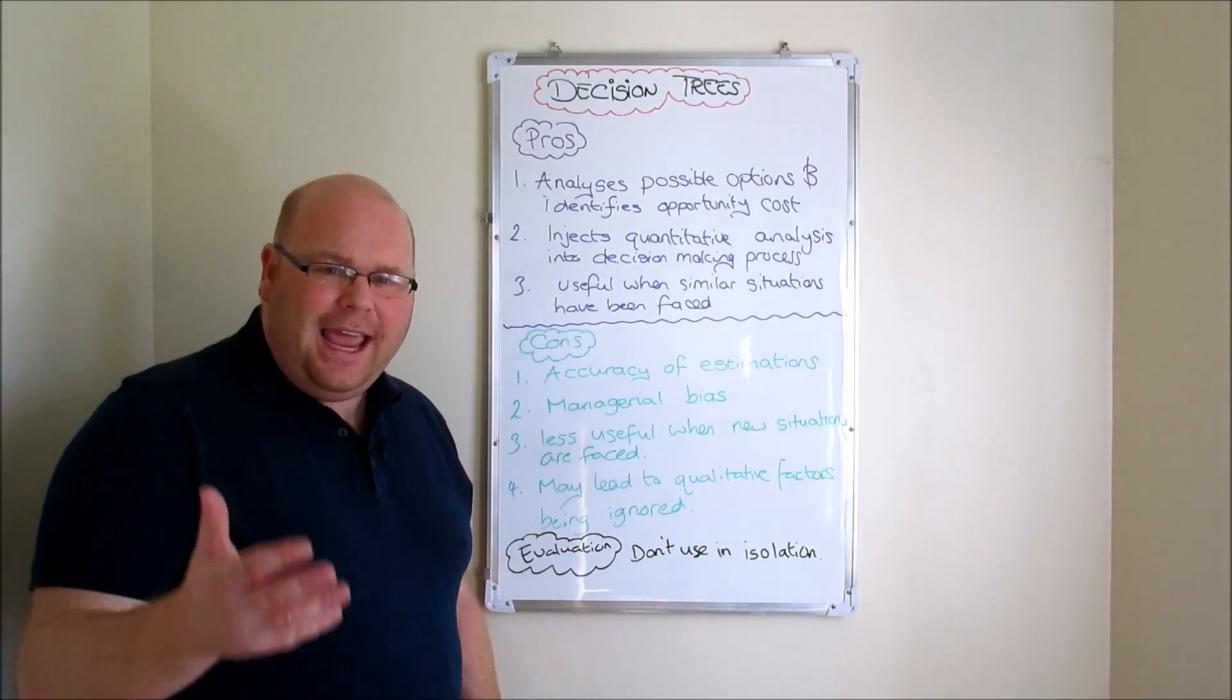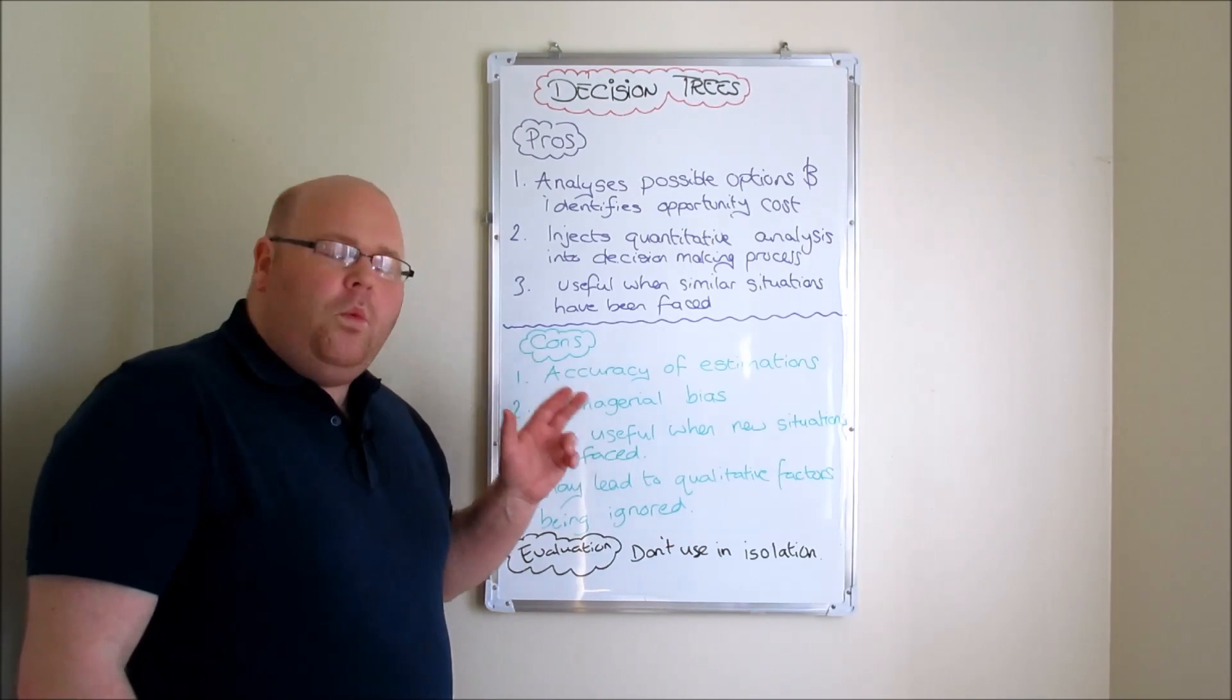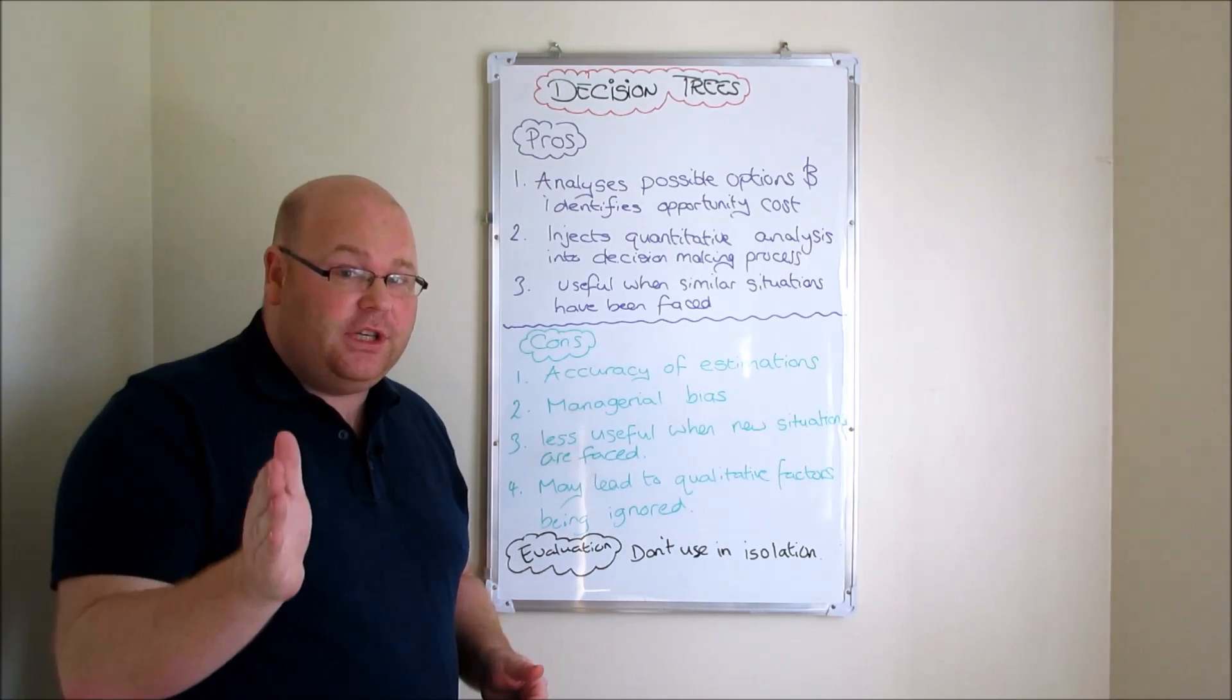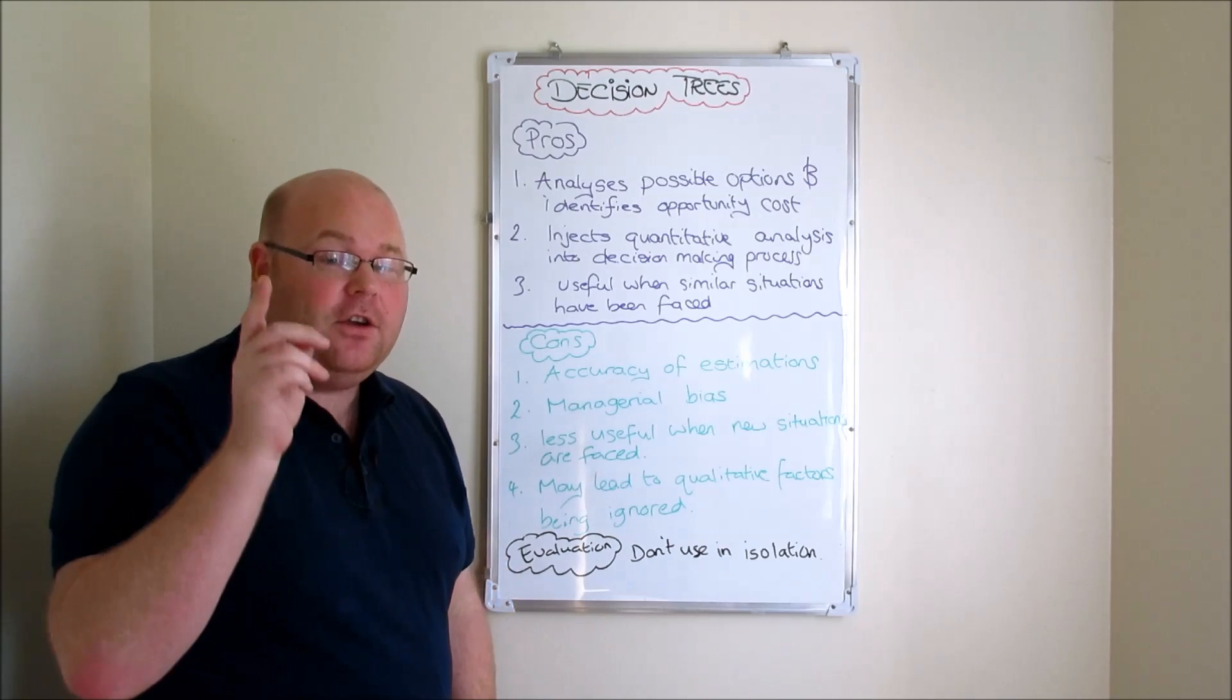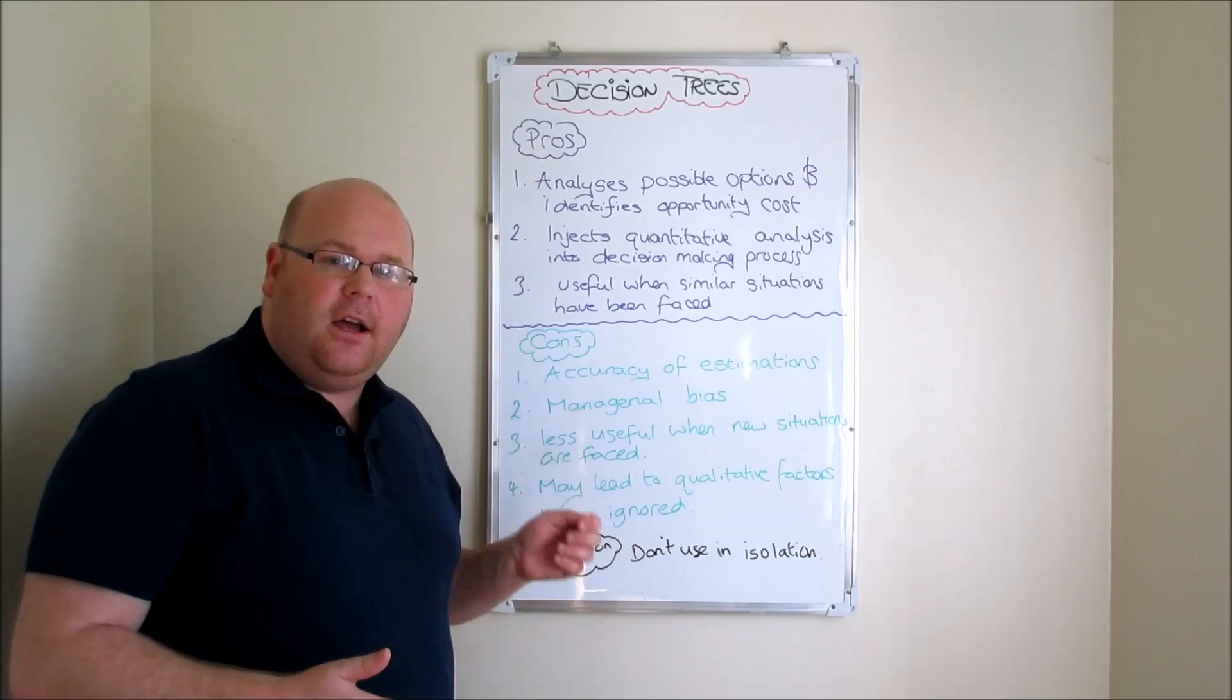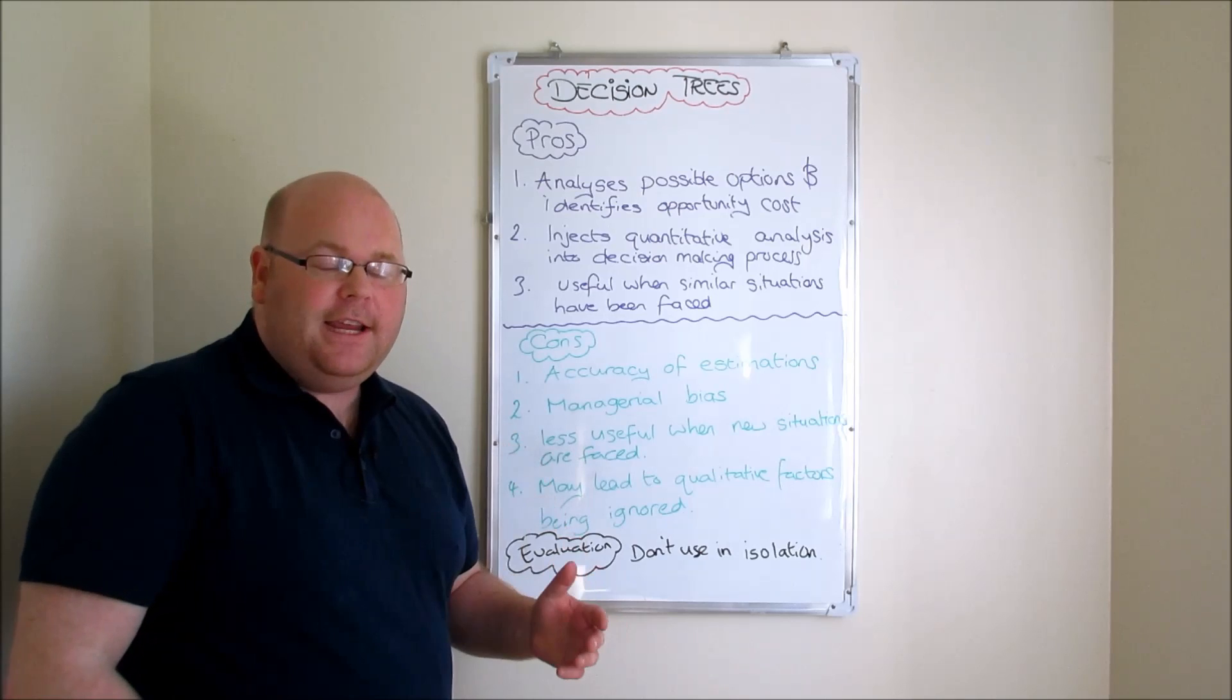But the other thing perhaps we want to end on in a conclusion is that with any quantitative decision making technique - break even, investment appraisal, critical path analysis, any of these kinds of guys - businesses should be reluctant using any of those techniques in isolation. Whenever we're making decisions, particularly long-term strategic decisions, managers should be drawing on a range of quantitative and qualitative sources of information in order to inform their decisions. It's the kind of thing we might squeeze into an evaluation. Don't use decision trees in isolation, use them as part of a suite of sources of information so you're drawing on different quantitative and qualitative techniques so decisions are based on a range of sources of data rather than just one.